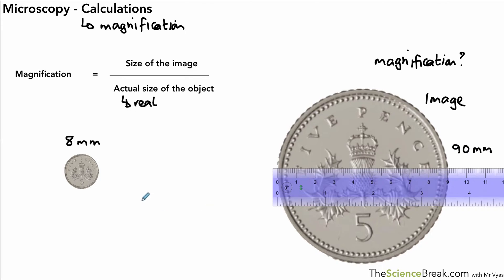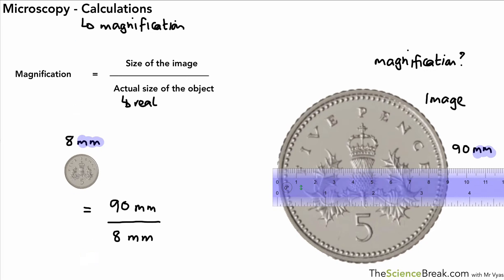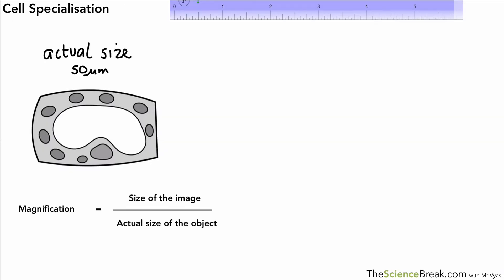We should write nine centimeters as 90 millimeters to keep the units the same. Then it's just a case of putting those numbers into the formula: 90 millimeters as the size of the image on top, and eight millimeters as the actual size of the object underneath. Plugging that into our calculator gives an answer of 11.25 — we put a times sign in front because it's a magnification. The image is 11.25 times bigger than the actual object.